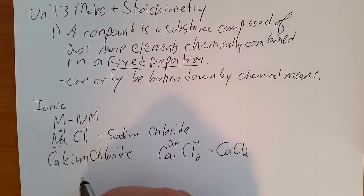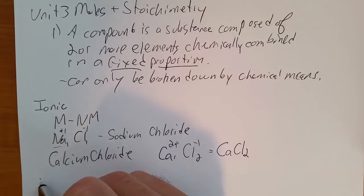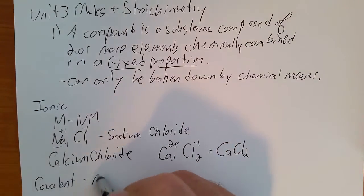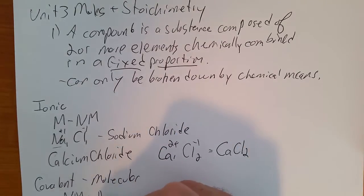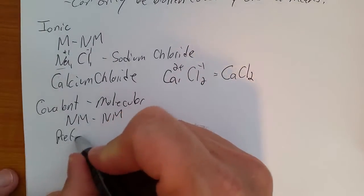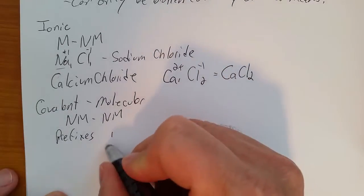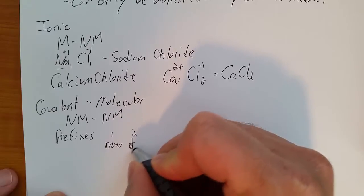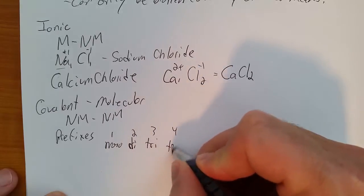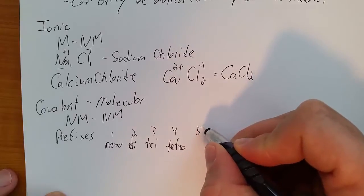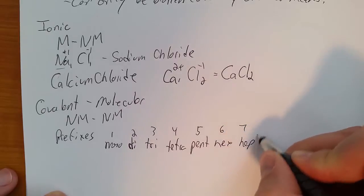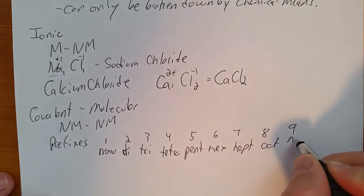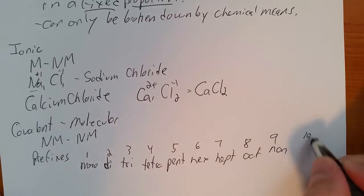When we have things that are covalently bonded or molecular, that's between a non-metal and a non-metal. So we use prefixes. 1 is mono, 2 is di, 3 is tri, 4 is tetra, 5 is penta, 6 is hexa, 7 is hept, 8 is oct, 9 is non, and 10 is deca.